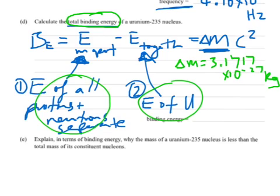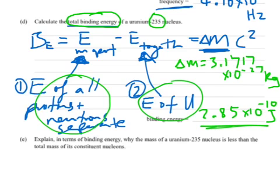So, that works out anyway, to be 2.8585 times 10 to the negative 10 joules. That's the total binding energy. Okay.